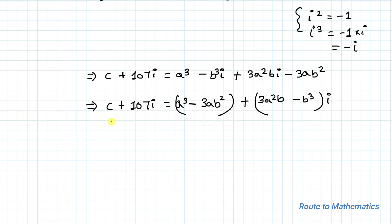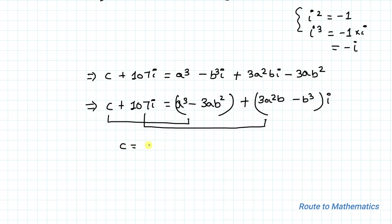Two complex numbers are equal if and only if their real parts are equal and their imaginary parts are equal. So we get equation 1: c equals a cubed minus 3ab squared, and equation 2: 107 equals 3a squared b minus b cubed.